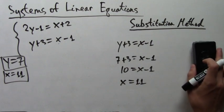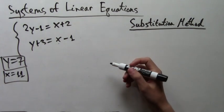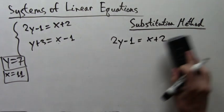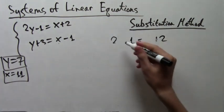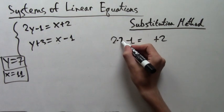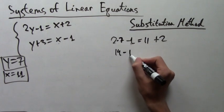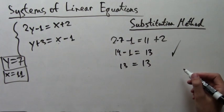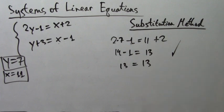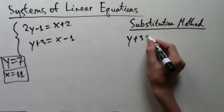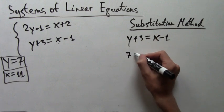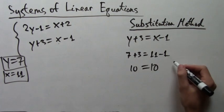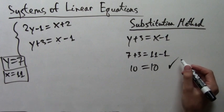So now that we have the answers, it's worthwhile to plug them into our equations and see if it's right. So the first equation is 2y minus 1 equals x plus 2. So let's plug in x equals 11 and y equals 7. So here I've plugged them in. We get 14 minus 1 equals 13 or 13 equals 13. This is true. So that's good. One of the two equations is known to be true. So what if we plug it into the second equation? y plus 3 equals x minus 1. Well, 7 plus 3 equals 11 minus 1 is the same as 10 equals 10, which is also true. So we know that our answer indeed works.